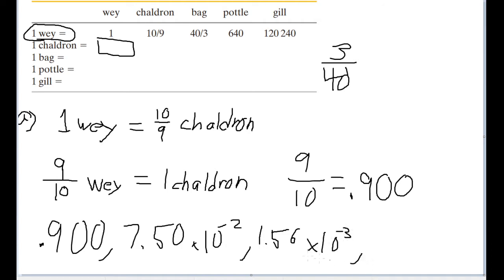Finally, we want to find out how many ways are in a gill. We're told that there are 120,240 gills in a way. Again, we take the reciprocal — one divided by 120,240 — and that is equal to 8.32 times ten to the power of negative six.